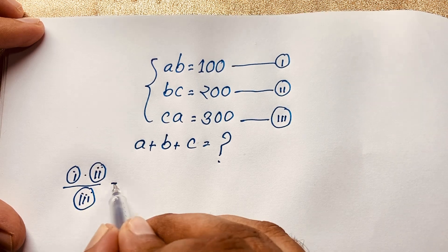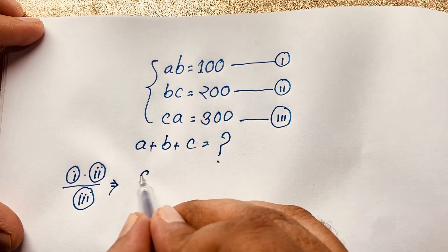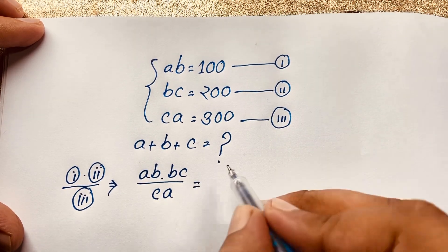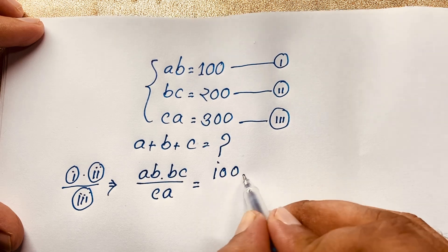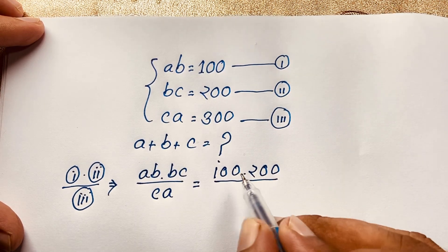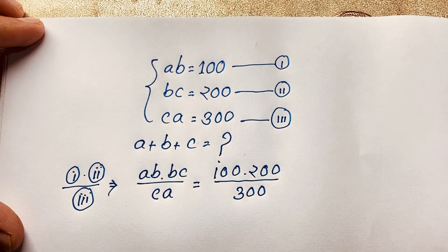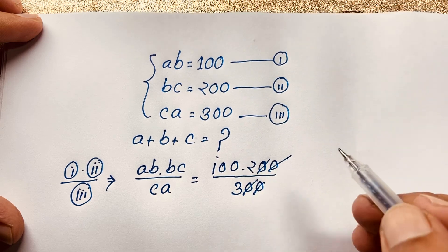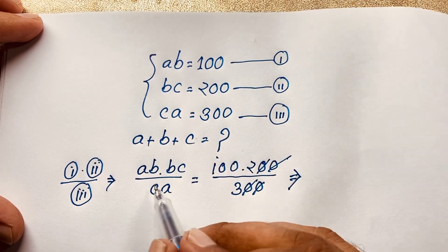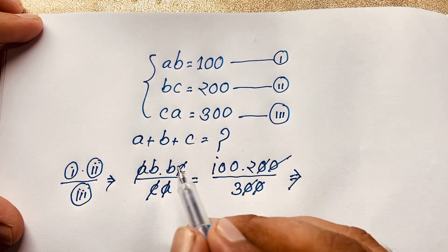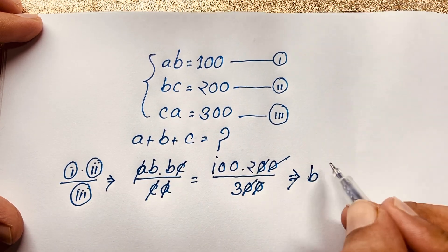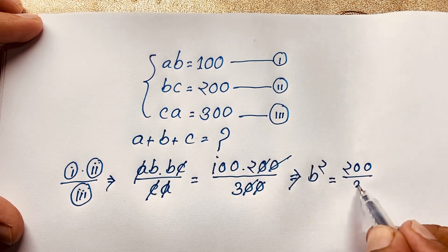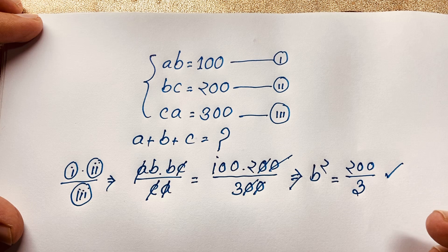You can see easily it will be AB times BC over CA, which is equal to 100 times 200 over 300. The zeros cancel out. Here A cancels, C cancels, leaving B times B. It will be B squared, then 2 times 100 is 200 and the denominator is 3. So we find B squared is equal to 200 over 3.